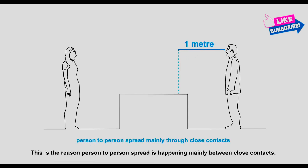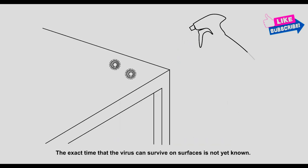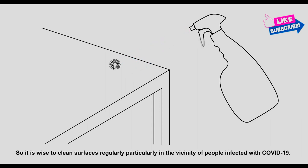This is the reason person-to-person spread is happening mainly between close contacts. The exact time that the virus can survive on surfaces is not yet known, so it is wise to clean surfaces regularly, particularly in the vicinity of people infected with COVID-19.